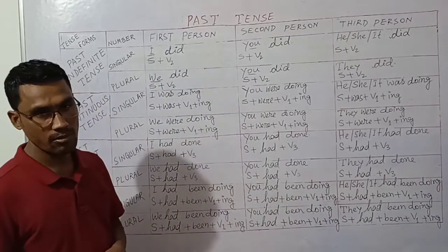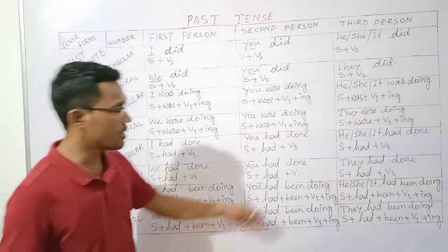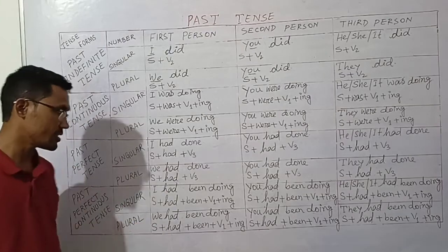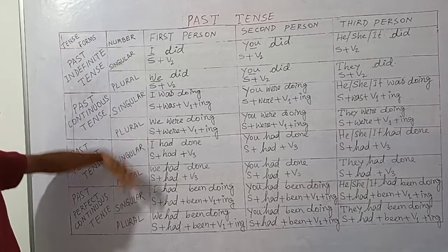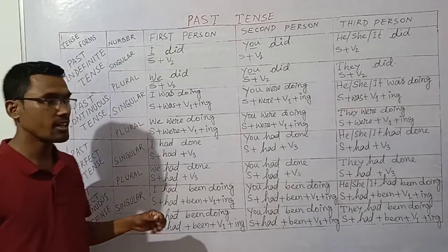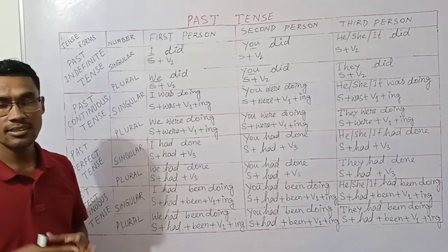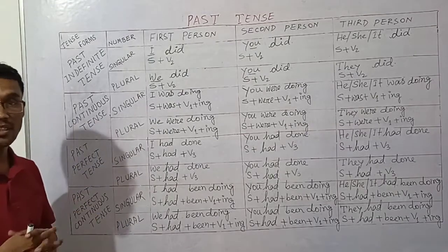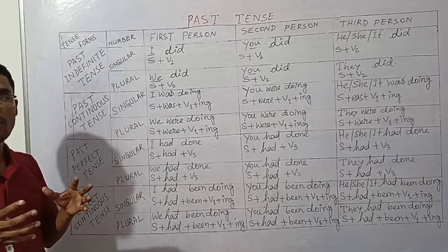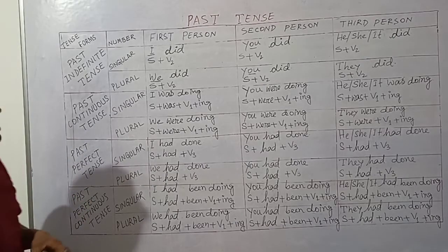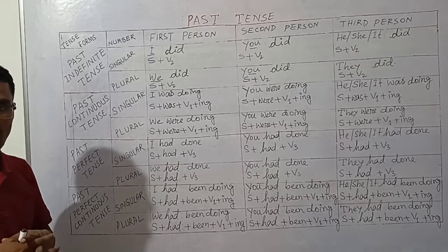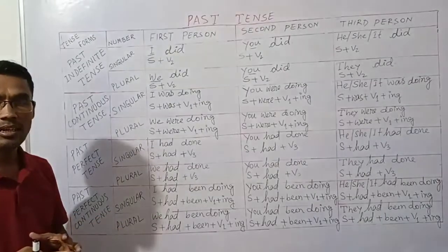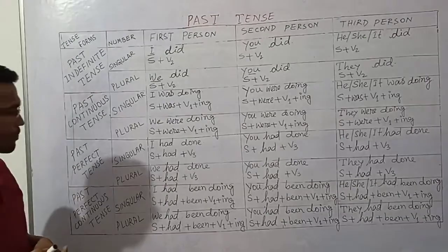Second person: 'You had been doing your homework.' Third person singular: 'He had been doing his homework,' 'She had been doing her homework.' Third person plural: 'They had been doing their homework.' The sentence structure for past perfect continuous is: subject plus 'had been' plus verb plus '-ing' plus object.